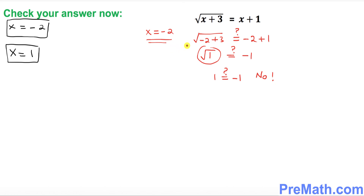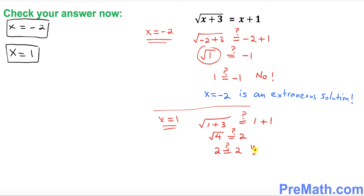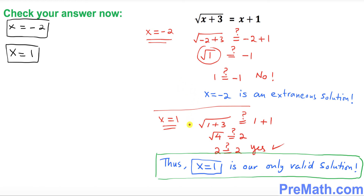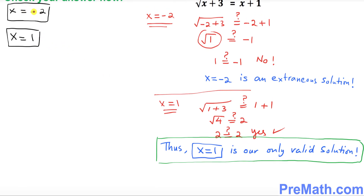Since both sides are not equal, x equals negative 2 is an extraneous solution. Now let's check x equals 1 in the original equation: square root of (1 plus 3) equals 1 plus 1. That becomes square root of 4 equals 2, which gives 2 equals 2. That is true, so x equals 1 is our valid solution.